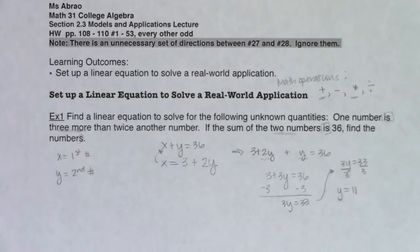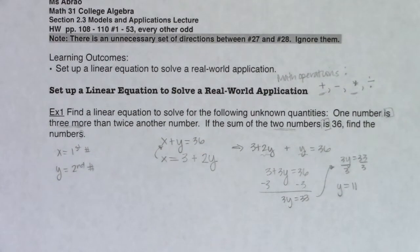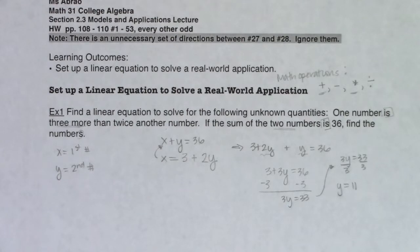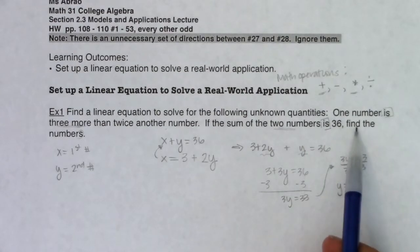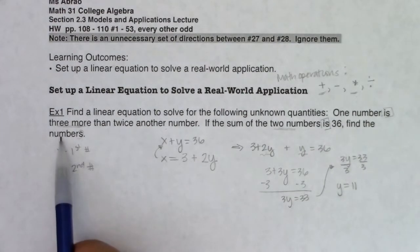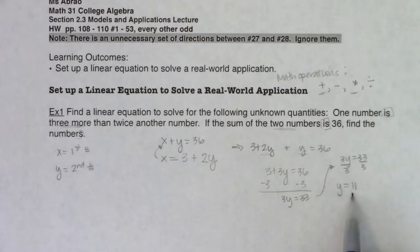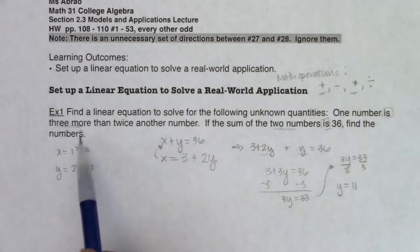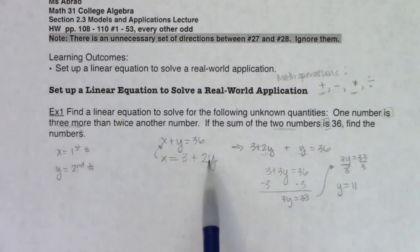Now I'm going to scoot this up just so I can finish this problem off. I don't want you to think that once you get here you're done with the question. Sometimes we get all excited, like oh my goodness I got an answer, and that is great. But the question said find the numbers plural—you've only found me one number. All I know right now is that y is equal to 11. I still don't know what x is equal to, but I do have an equation for it.